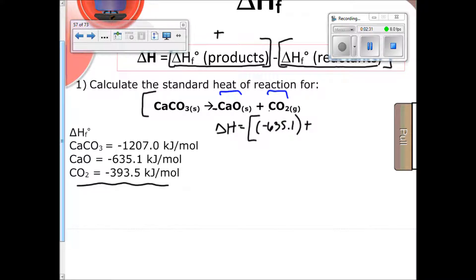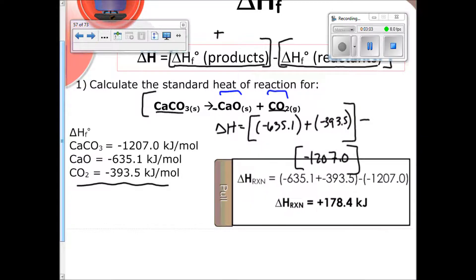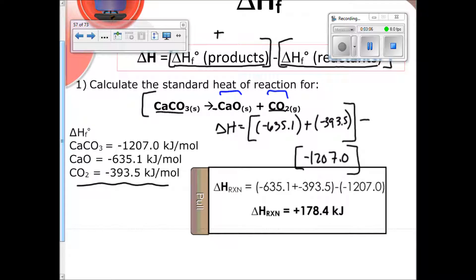We have to add together our other product, which is carbon dioxide, which is negative 393.5. Those are all of our products, so I can bracket it out. And then, remember, I have to subtract out my reactants, and I'm going to put it below it because I'm running out of room here. I'm going to subtract out my reactants. I have calcium carbonate up here, and there's only one mole of it, so it's just going to be the value at negative 1207.0. And then, from there, all you do is the algebra. So if you go ahead and work that out, you're going to get 178.4 kilojoules. And that's the enthalpy of your reaction. Easy peasy.